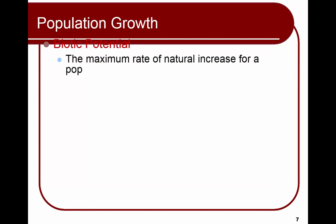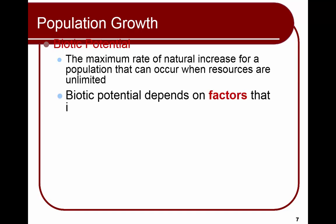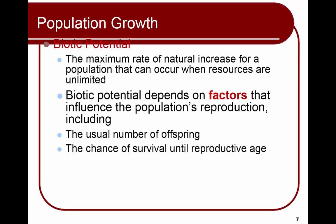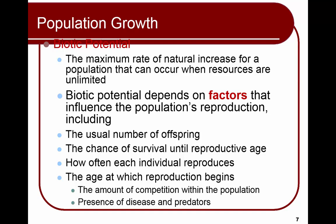Another vocab term is biotic potential. This is the highest rate of natural increase for a population that can occur if resources are unlimited. It depends on factors that influence reproduction, including how many offspring they usually have, the chance that offspring will survive until reproductive age, how often they reproduce, and at what age they begin reproduction. It's also influenced by competition within the population and the presence of disease or predators.